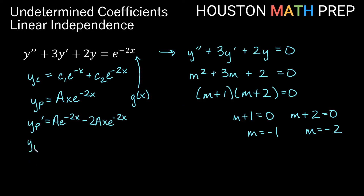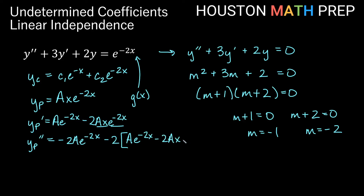Now getting our second derivative, the derivative of a e to the negative 2x gives negative 2a e to the negative 2x, and applying the product rule to the second term gives another negative 2a e to the negative 2x, combining to negative 4a e to the negative 2x, plus 4ax e to the negative 2x.